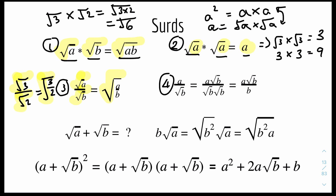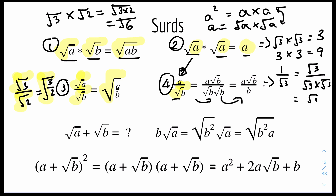Rule number 4 is rationalize the denominator. We have a normal number on top — like 1, 2, 3, or 4 — over a surd number. To get rid of the surd, we multiply both top and bottom by root B. Root B times root B becomes B by rule 2, and the top becomes A root B. So the result is A root B divided by B. For example, 1 over surd 3 becomes surd 3 over 3.